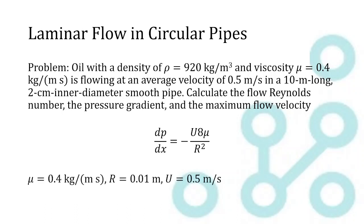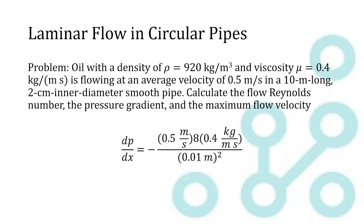So now we have all the values in the problem statement. We have mu equals 0.4, we have r equals 0.01, and we have U equals 0.5. So now we're in a position where we can plug these values in to the equation directly, which is really nice.